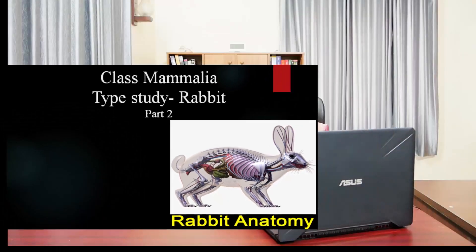Welcome back to the type study of class Mammalia. In the last class we discussed the gender characters, morphology and the integumentary system of rabbit. Today we are moving on to the skeletal system.